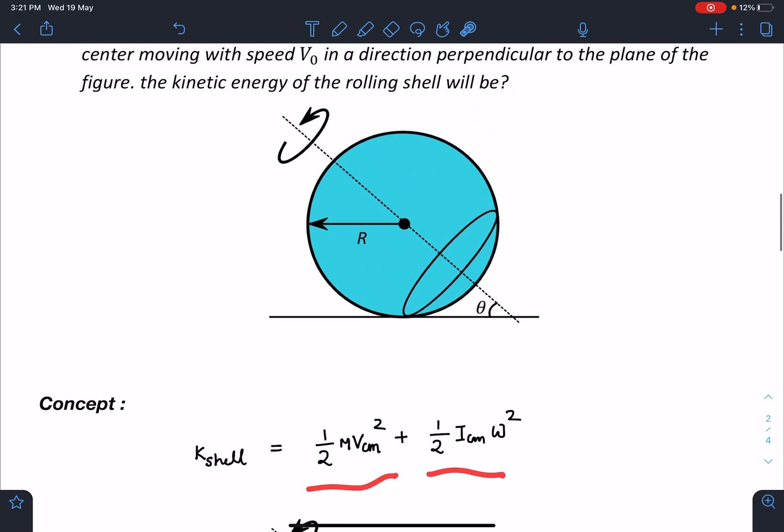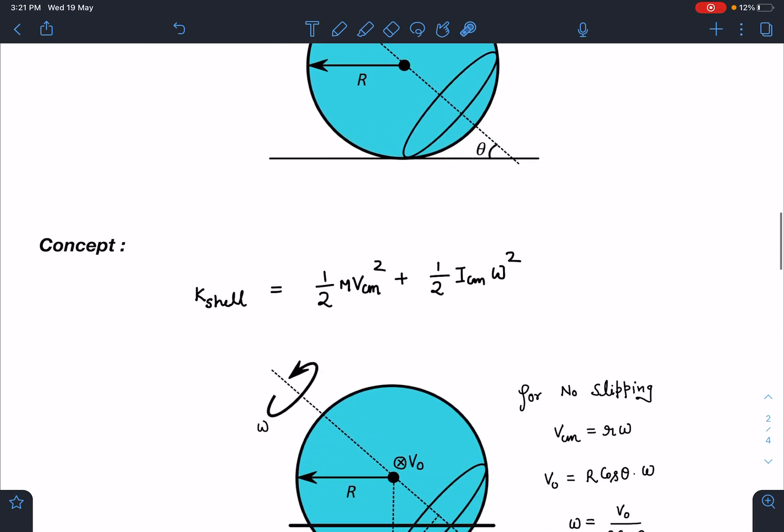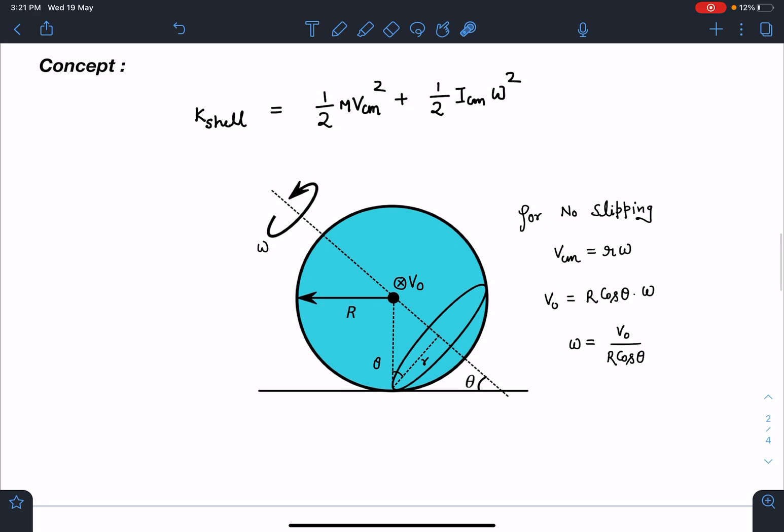The shell is going to rotate about this axis, and this point will be under a no-slipping condition. Let's derive omega. This particle will be rotating in a circle of some radius r.